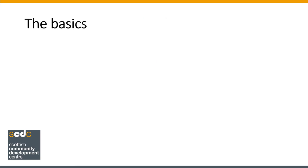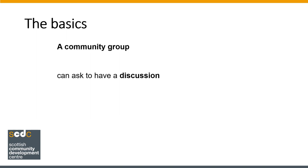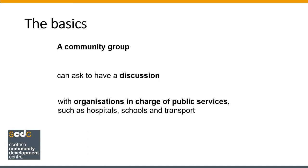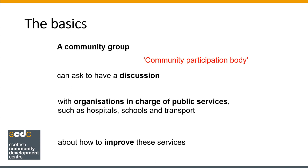By making a participation request, a community group can ask to have a discussion with organisations in charge of public services — such as hospitals, schools and transport — about how to improve these services. There are some technical terms used in the legislation. A community group who makes a participation request is called a community participation body. The discussion set up as a result is called an outcome improvement process. And the organisations you can make a participation request to are called public service authorities.